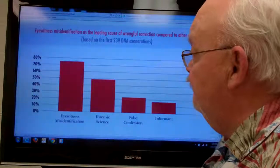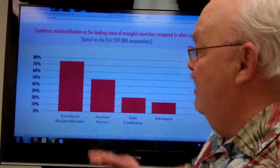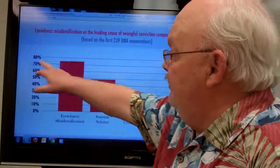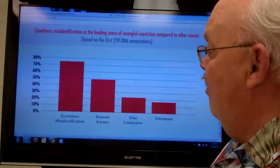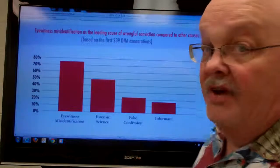which is to say mistakes by eyewitnesses, amounts to about 75% of all wrongful convictions.